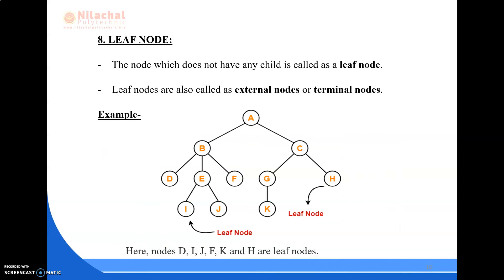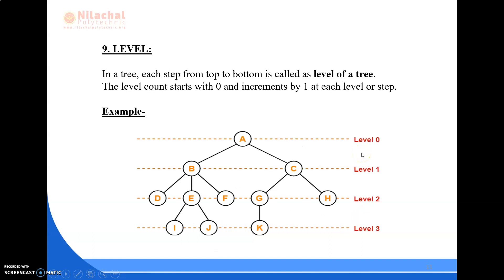Next comes the leaf node. A node which does not have any child is called a leaf node. Leaf nodes are also called external nodes or terminal nodes. Here, D, I, J, F, K, and H have no further child nodes, so these are known as leaf nodes.